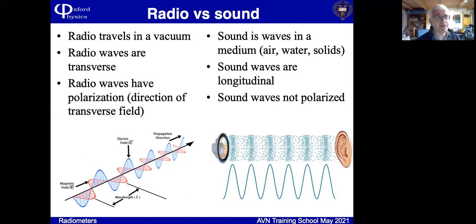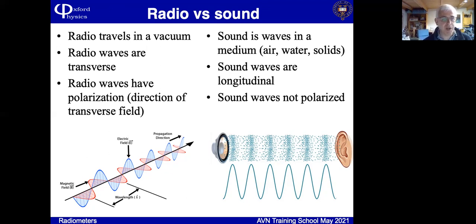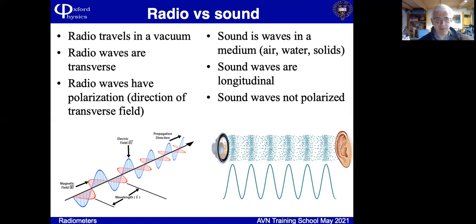Radio and electromagnetic waves are transverse waves. The thing which is waving — in this case the electric and magnetic fields — points in a direction transverse to the direction of propagation. That means radio waves have polarisation, because there are two dimensions in the plane perpendicular to propagation and the wave can be pointing in any direction in that plane. Sound waves are longitudinal waves, so the motions of the particles are in the direction of propagation, and that means sound waves are not polarised.